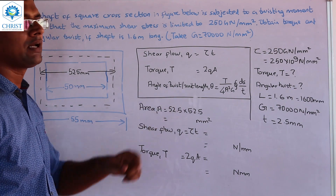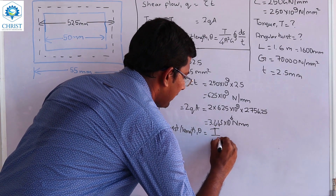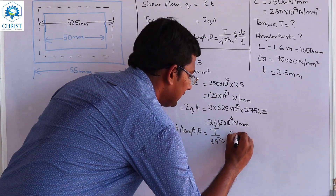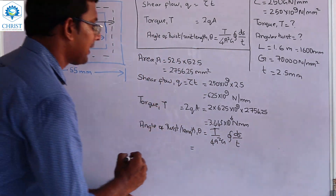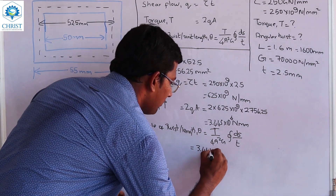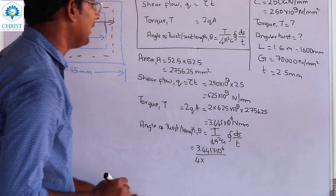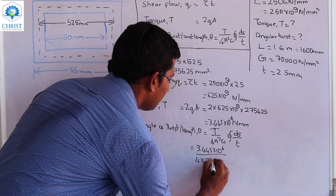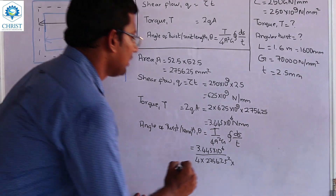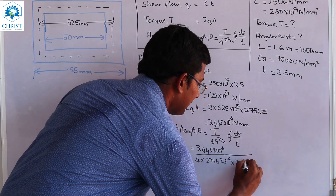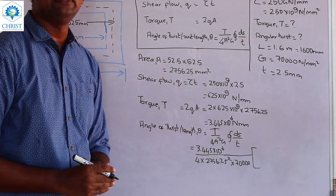The angle of twist per unit length θ is given by the formula: T divided by 4A² G, multiplied by the surface integral of ds/t. This equals 3.445 × 10⁶ divided by 4 times the area of 2756.25 mm squared, times G equal to 70,000 N per mm squared, into the surface integral of ds/t.